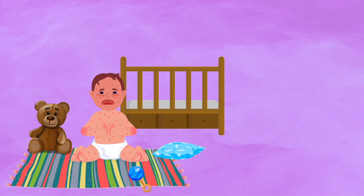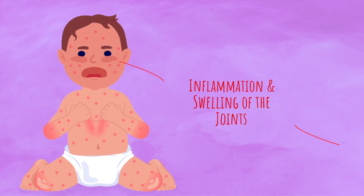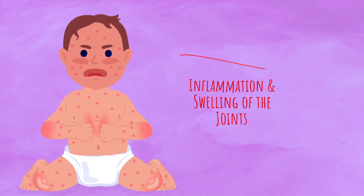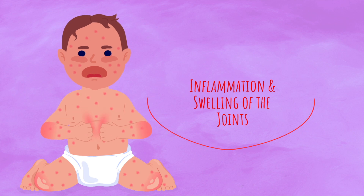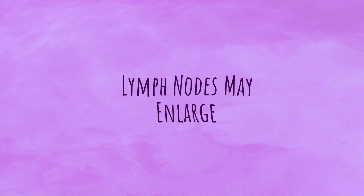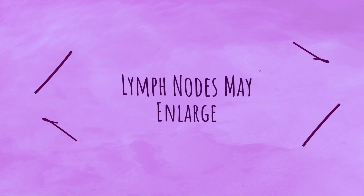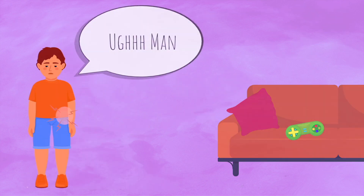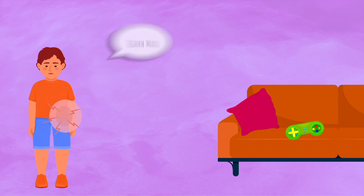There may be edema of the hands and feet. The child's joints may appear to be red and swollen. The skin on the fingers and toes peels in layers. Cervical lymph nodes may become enlarged. The child may also report having abdominal or stomach pain.